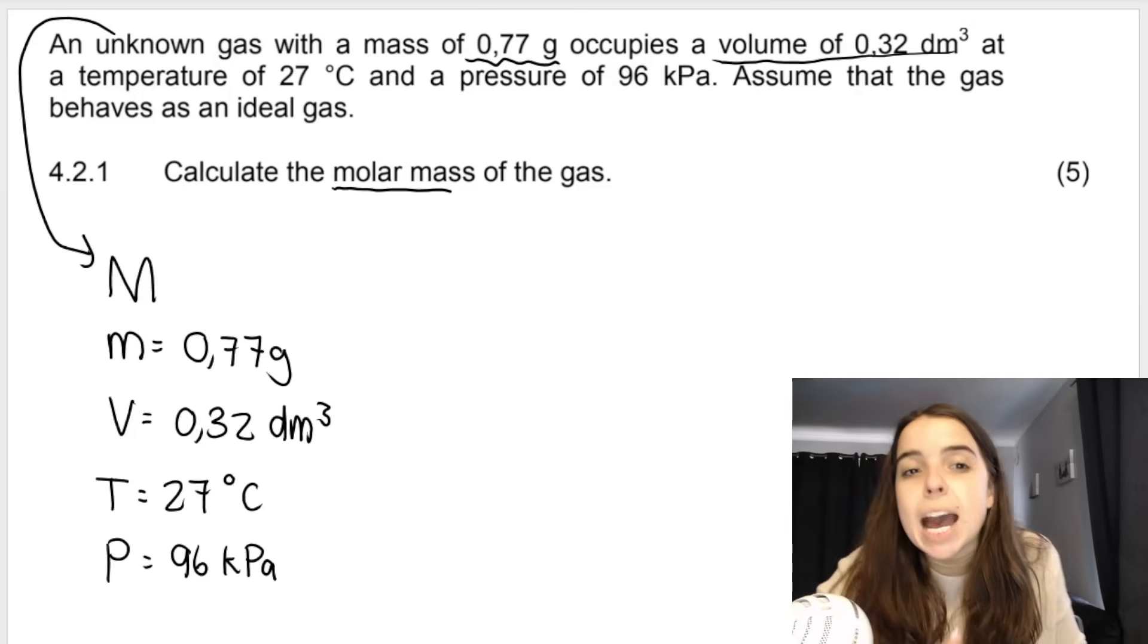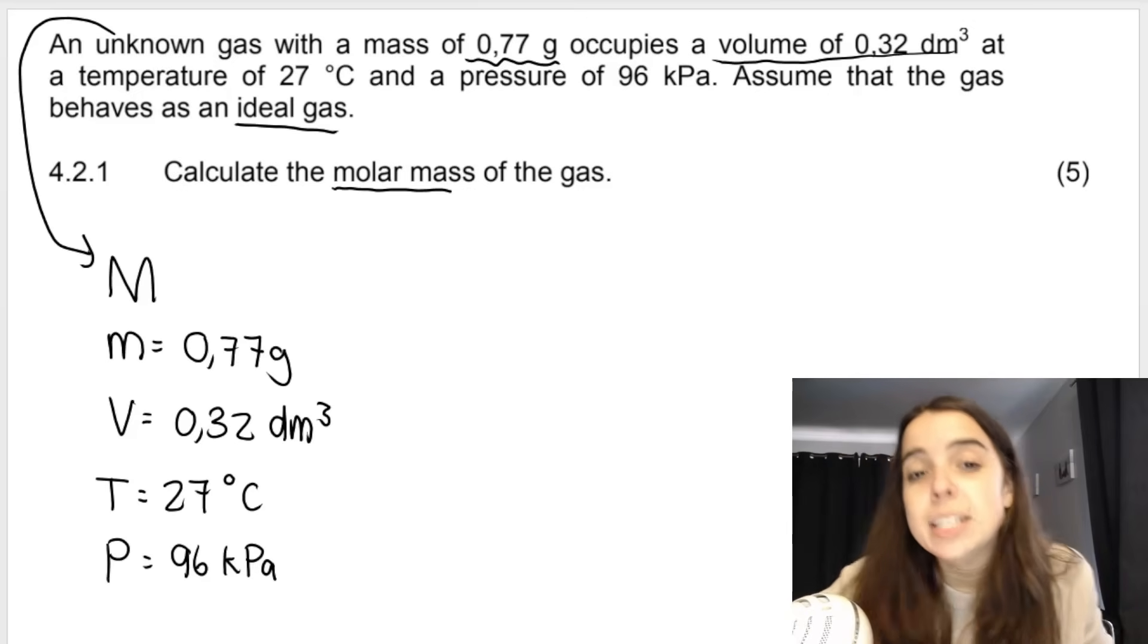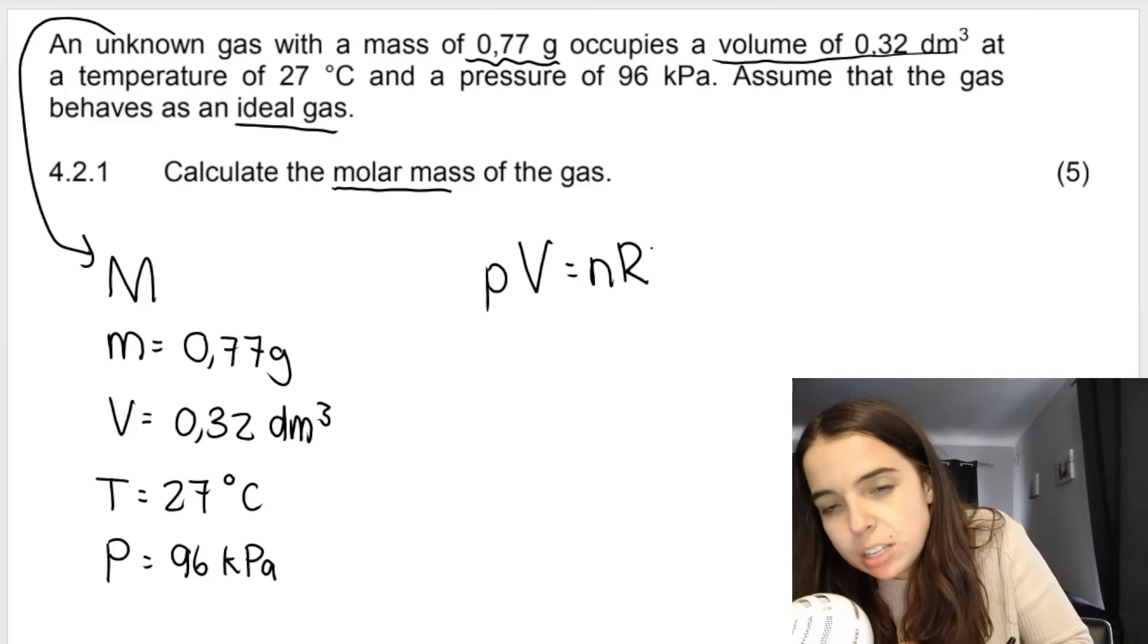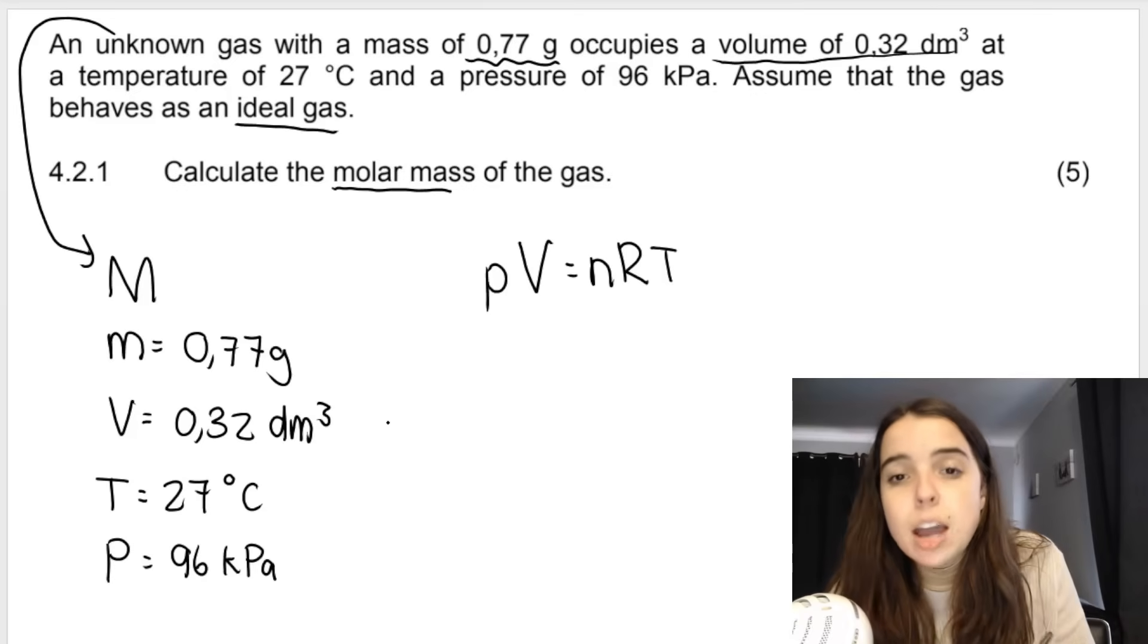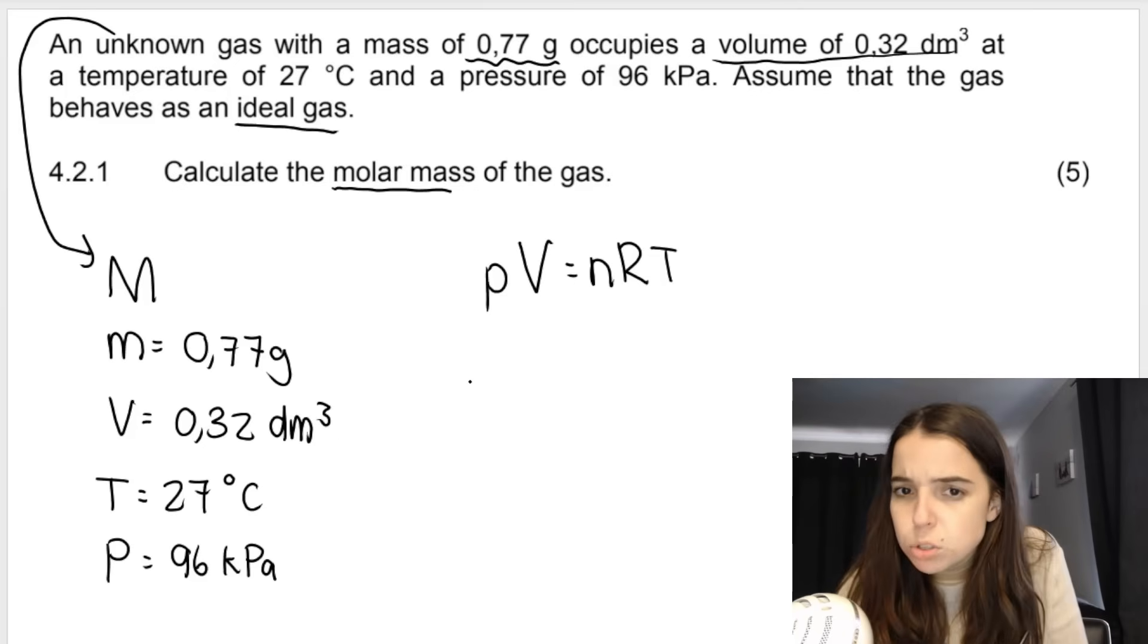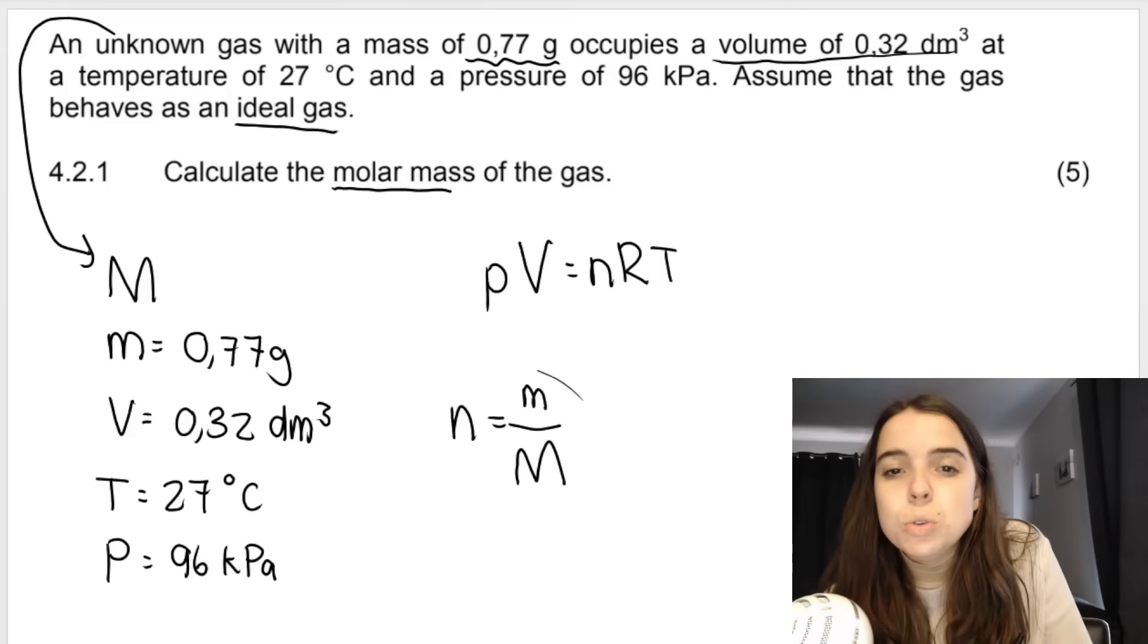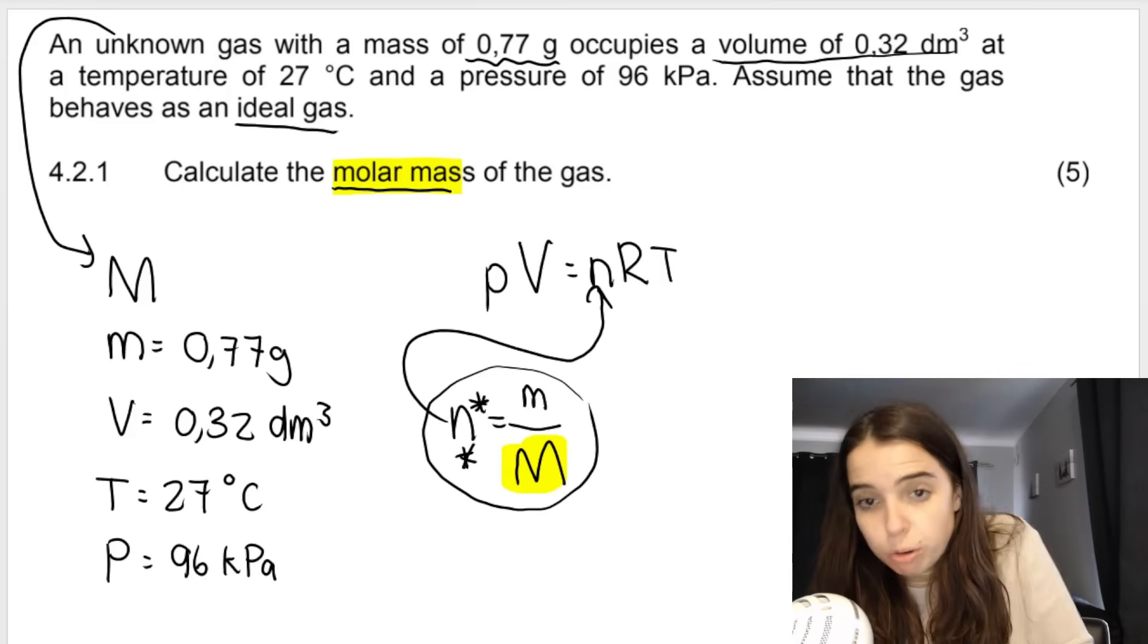And they give me the pressure in 96 kilopascals. And they say, assume that the gas behaves as an ideal gas, which is hinting at the fact that we need to use the ideal gas equation, which is PV equals NRT. The other hint that we have to use that formula is because they want the molar mass of the gas. Now, remember what I mentioned earlier in this video, in order to get molar mass, we need moles. We're going to eventually use this formula. So our end goal is to use this formula to calculate molar mass of the gas. But in order to use this formula, we first need number of moles. To get number of moles, we're going to use the following formula.